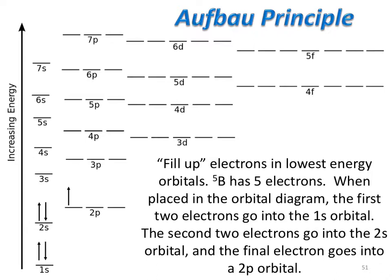The Aufbau principle, or the filling up principle, basically states that we put electrons in their lowest energy levels first, and then fill them up according to energy level. When putting electrons in the orbitals in an orbital diagram, we use the arrow to designate their spin. An up arrow designates a spin quantum number of plus one-half. A down arrow designates a spin quantum number of minus one-half.